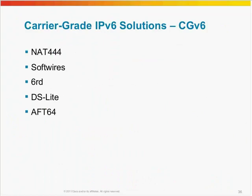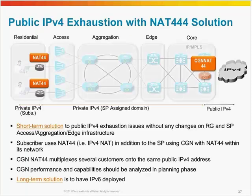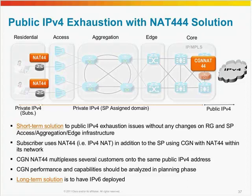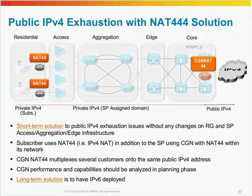Now I'm going to quickly cover techniques which are also called carrier-grade IPv6 solutions for different purposes within service provider networks. The first technique is NAT444. Looking at the diagram: you have not done anything to move towards IPv6 — all you're doing is buying more time. NAT44 is basically the traditional IPv4 NAT. The service provider, at the residential gateway, is doing translation from private to private. Then, in the core network, you're dropping in a CGN device — a NAT44 CGN device — which multiplexes several customers onto the same public IPv4 address and sends it out. In this whole technique, you're not doing anything to move towards IPv6, but just preserving your IPv4 techniques and buying more time. The long-term solution is to go towards IPv6.